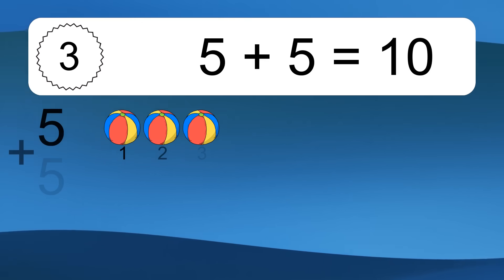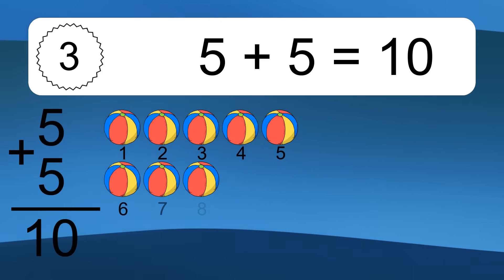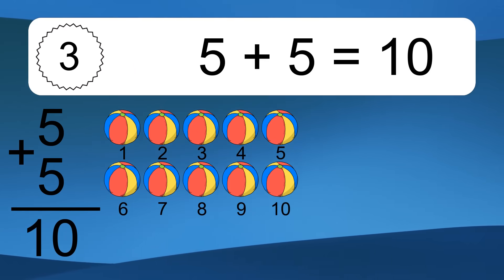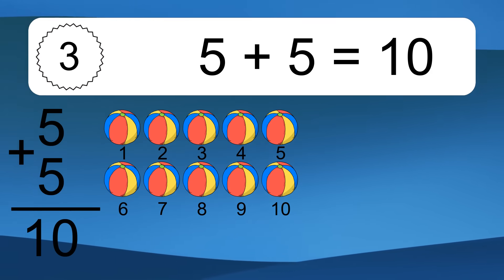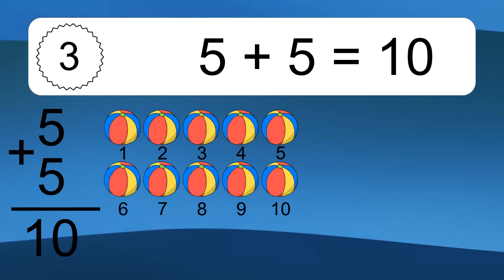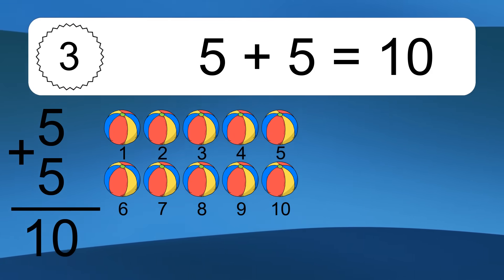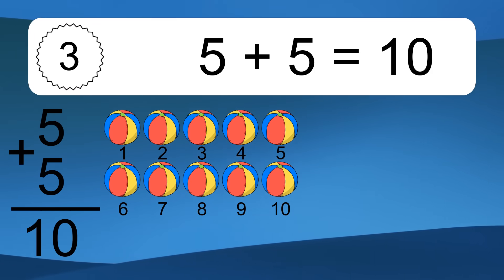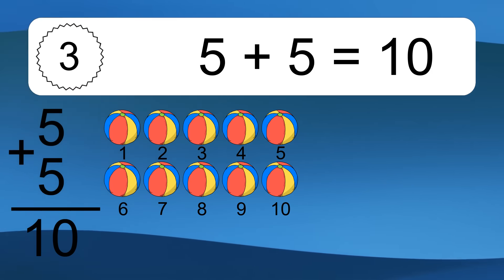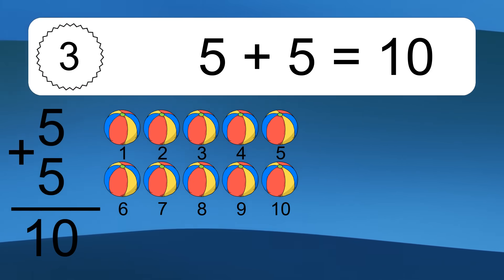5 plus 5 equals 10. Let's count it: 1, 2, 3, 4, 5, 6, 7, 8, 9, 10.